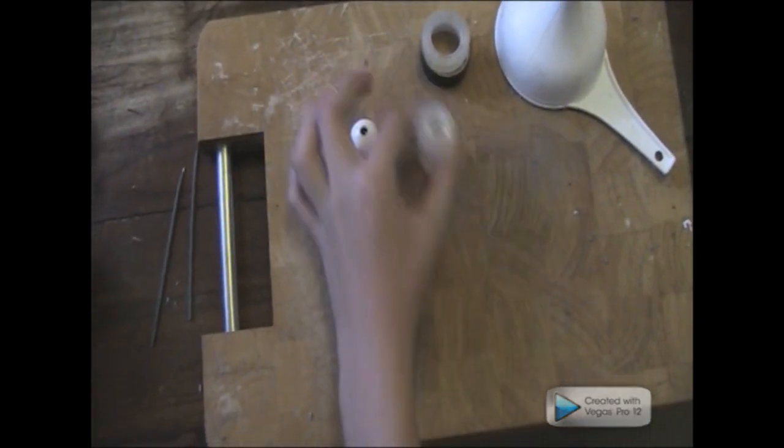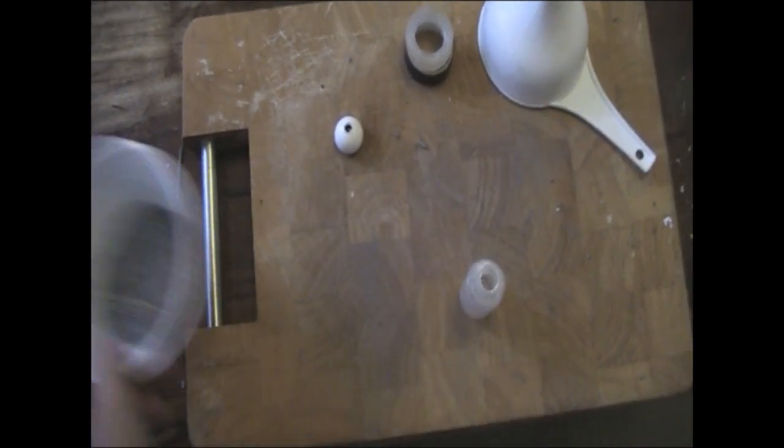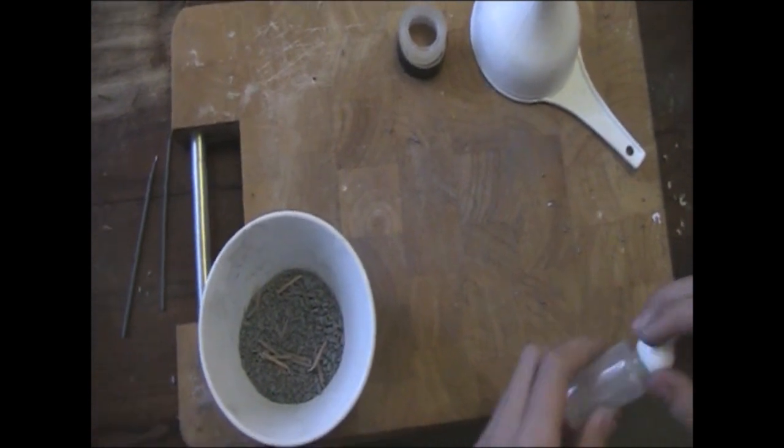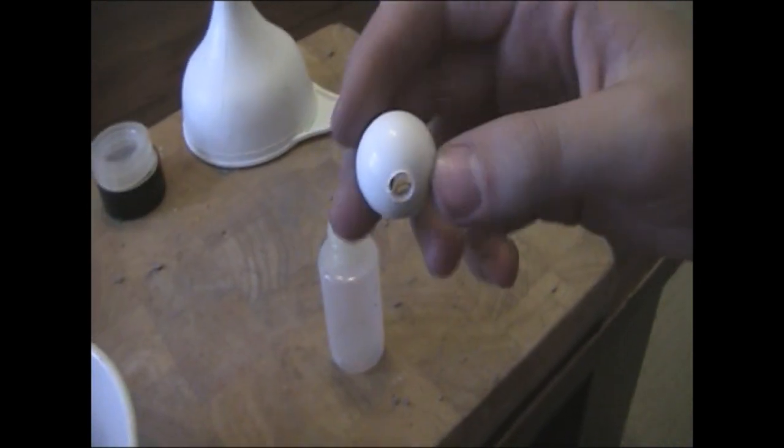And what we're going to do now is empty all the sparklers into the container. What you're meant to do with the container lid is make a hole with a drill on the top of it.